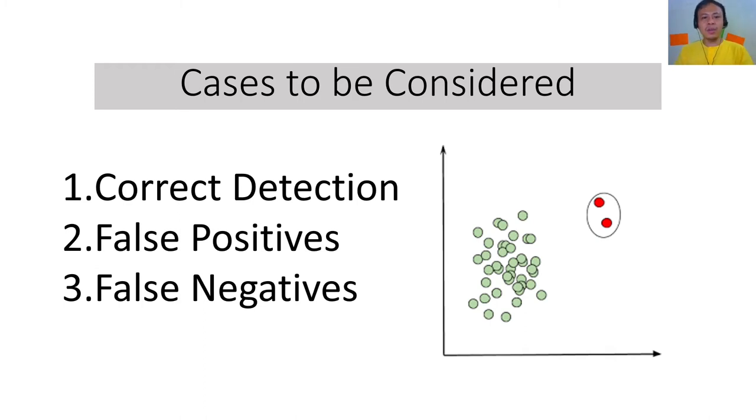In some cases, we may falsely identify that a certain data point is negative and that it is not anomalous, whereas in fact it is anomalous.